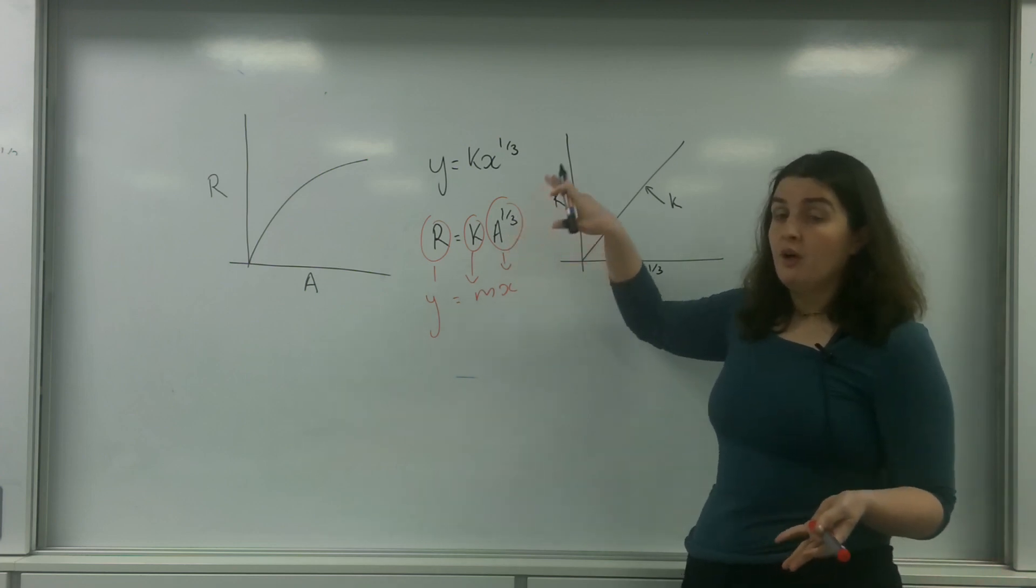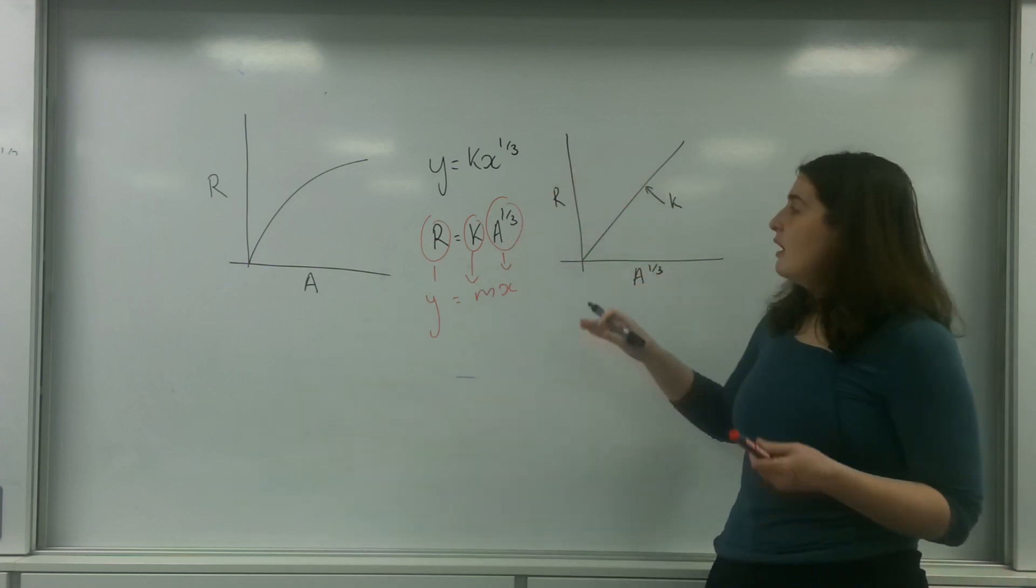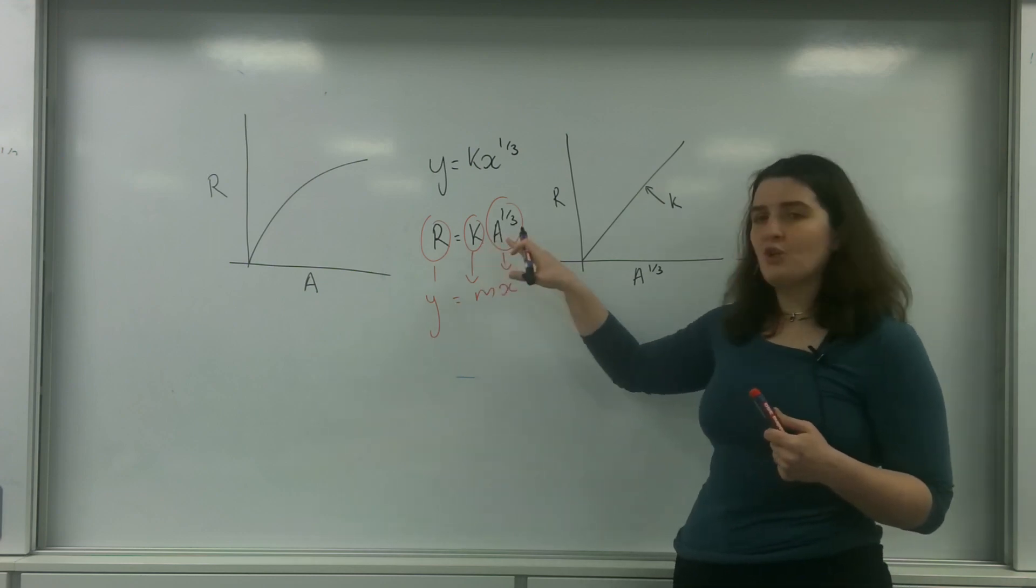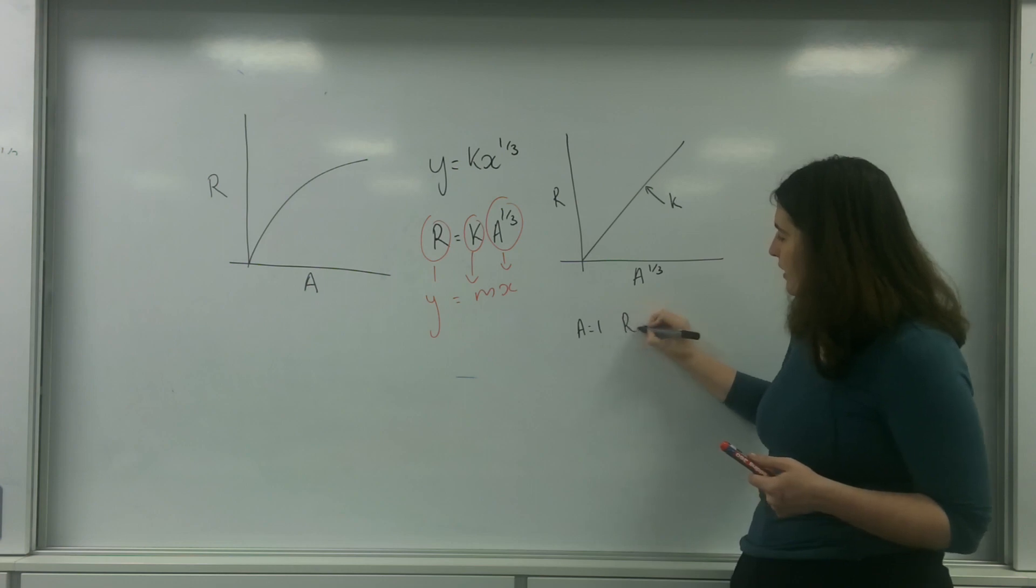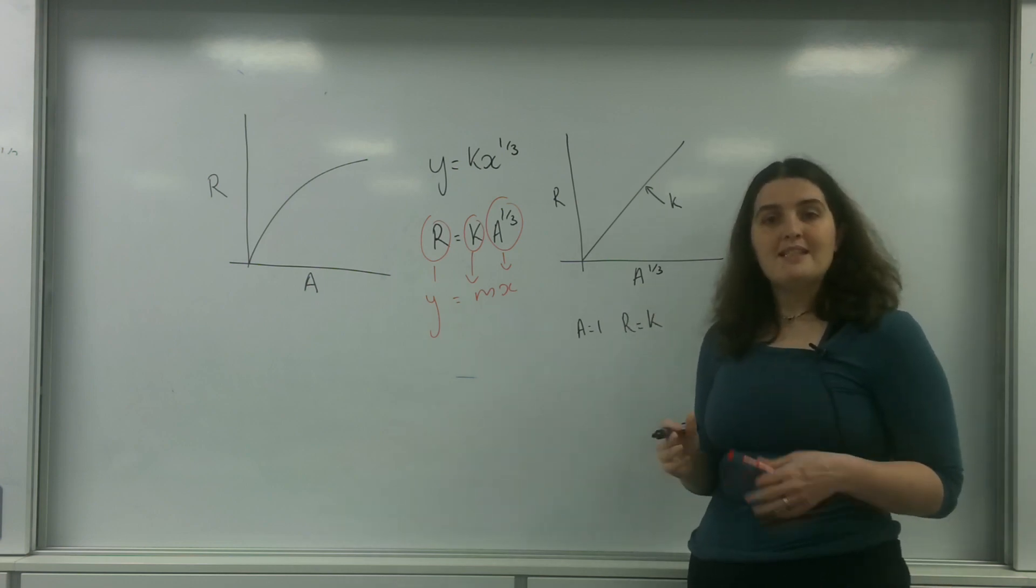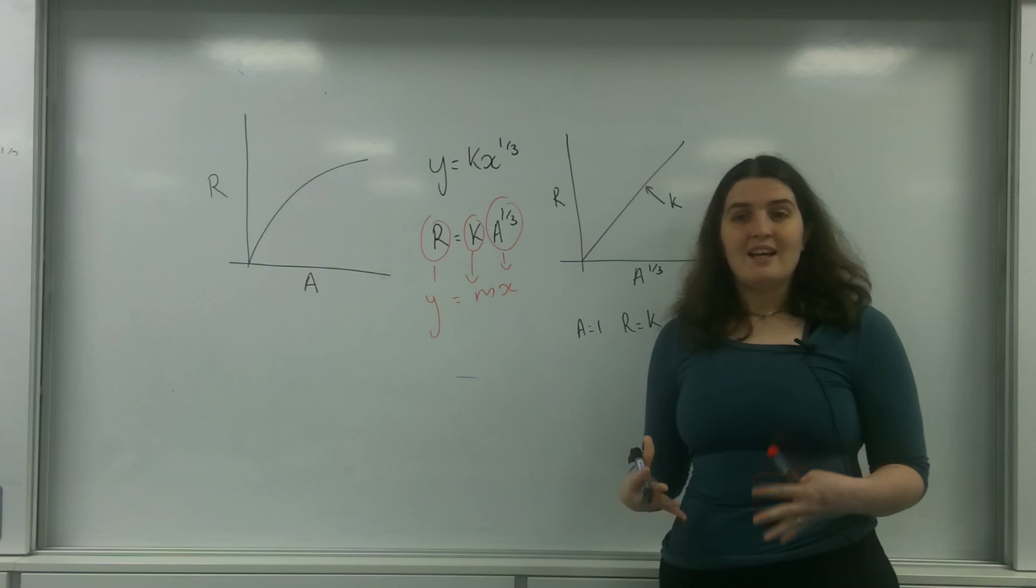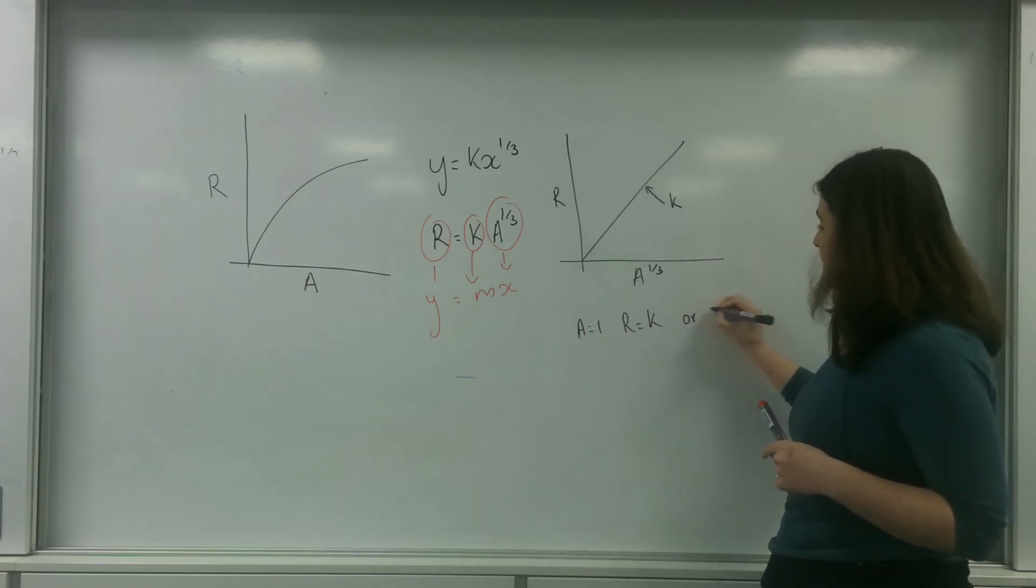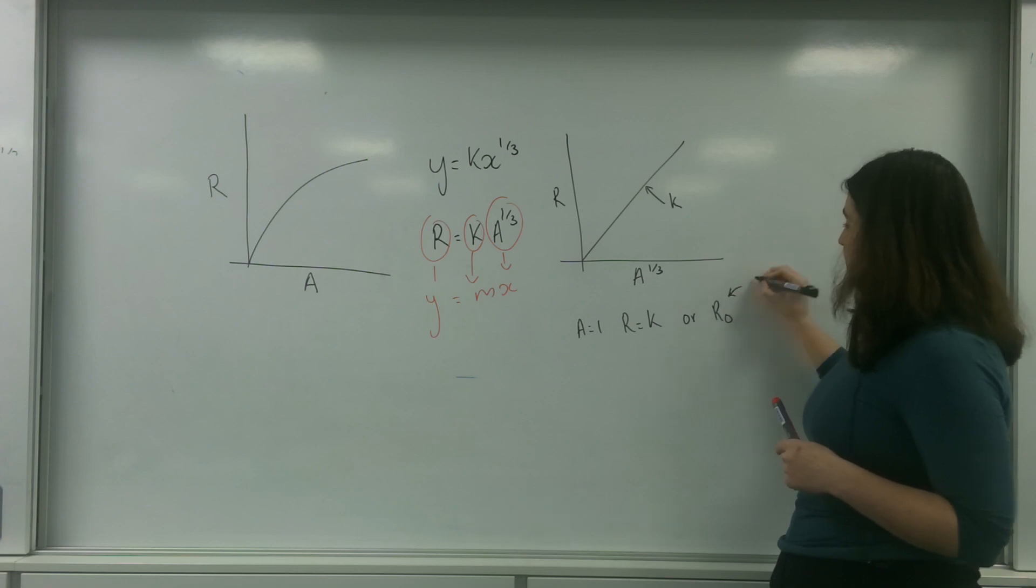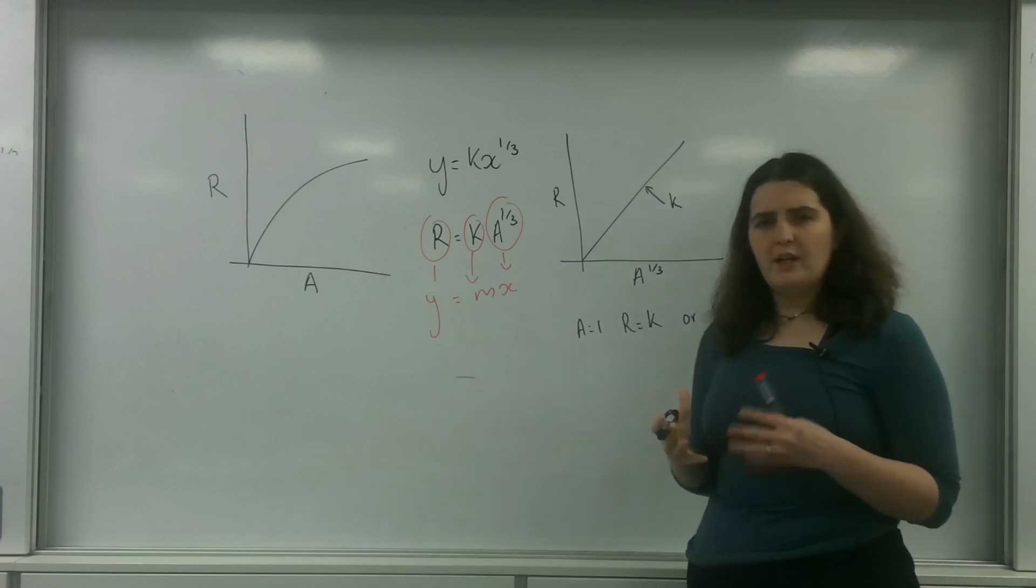the cube root of one is one. And this constant times by one means that if A equals one, r equals this constant, which means this constant represents the radius of one nucleon, or r naught. This is the radius of one proton or a neutron.